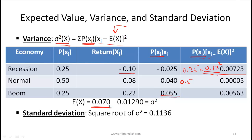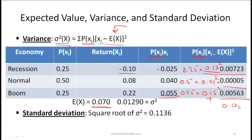For the normal economy row, the probability is 0.5, the deviation between 0.08 and the expected value 0.07 is 0.01; squaring and multiplying by the probability gives a small number. For the boom, probability is 0.25, the deviation is 0.22 minus 0.07 = 0.15; squaring and multiplying gives 0.00563. Adding all three numbers gives a variance of 0.0129.